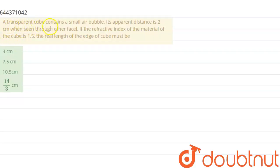The question is: A transparent cube contains a small air bubble. Its apparent distance is 2 cm when seen through other facets. If the refractive index of the material of cube is 1.5, the real length of the edge of cube must be...